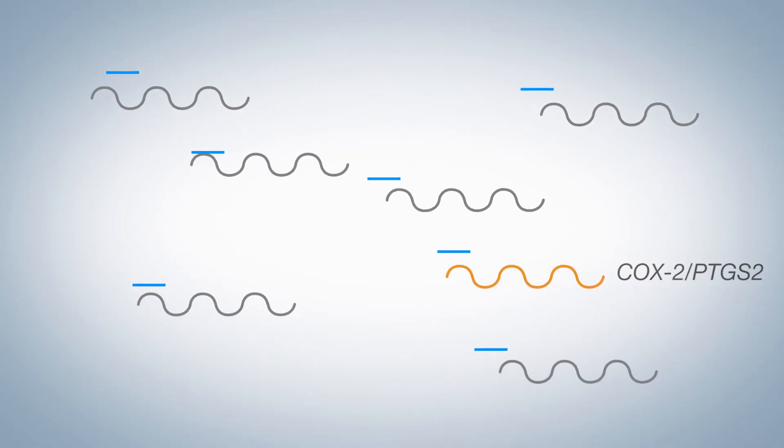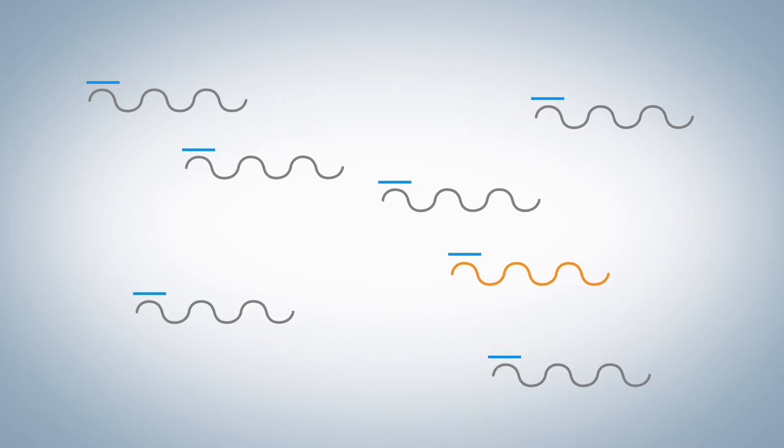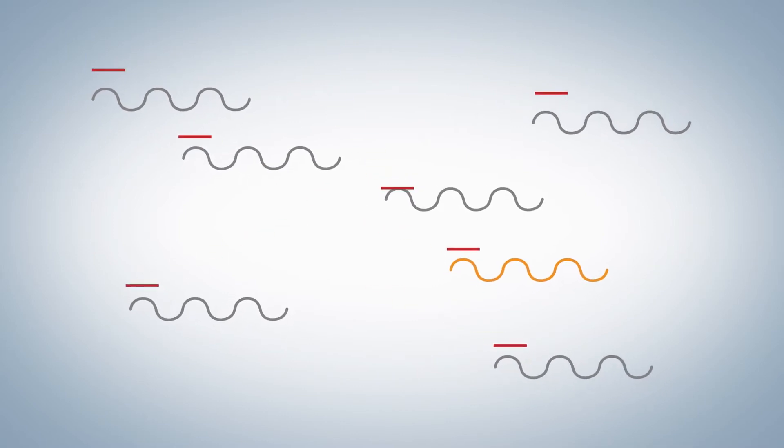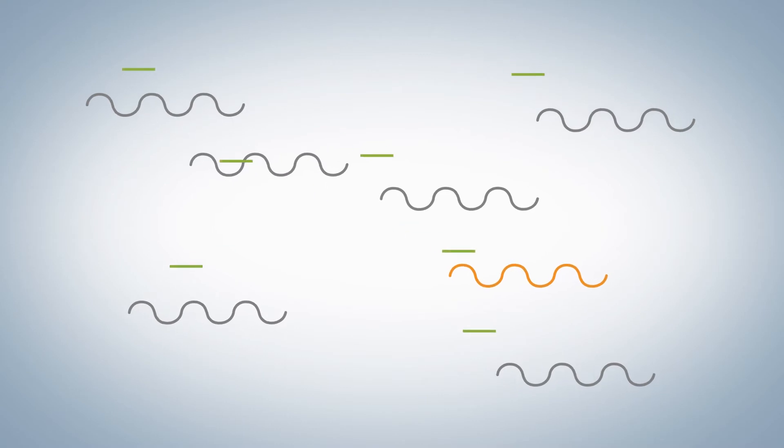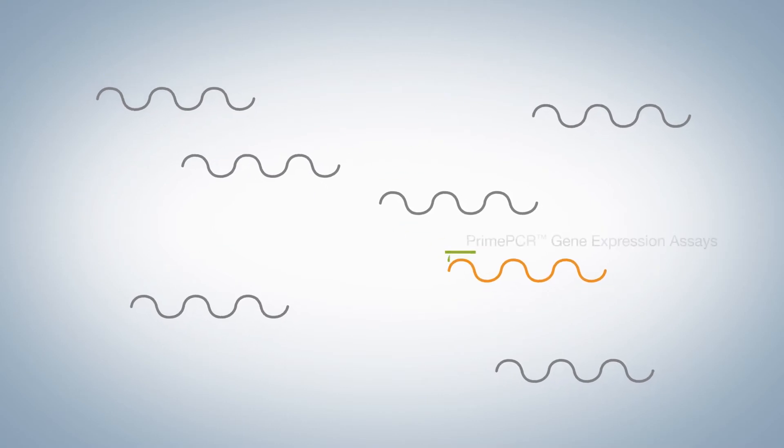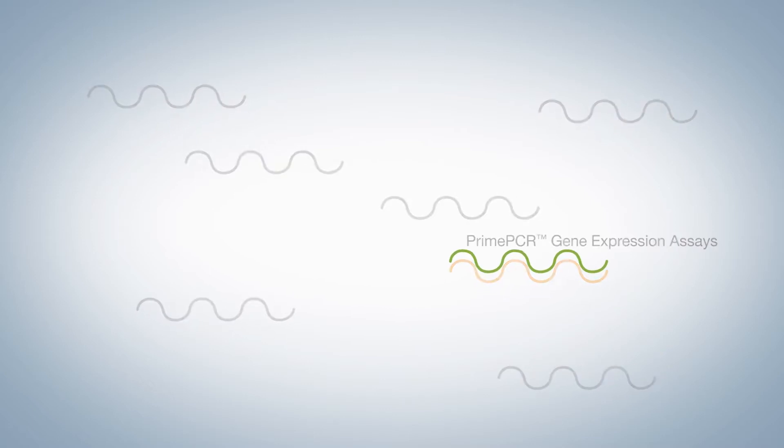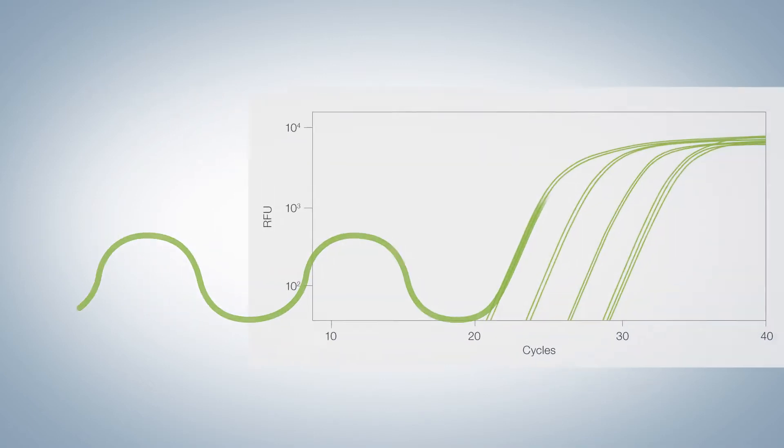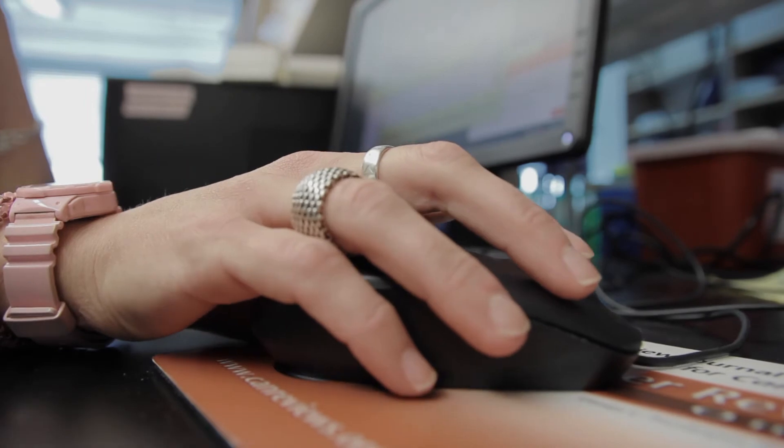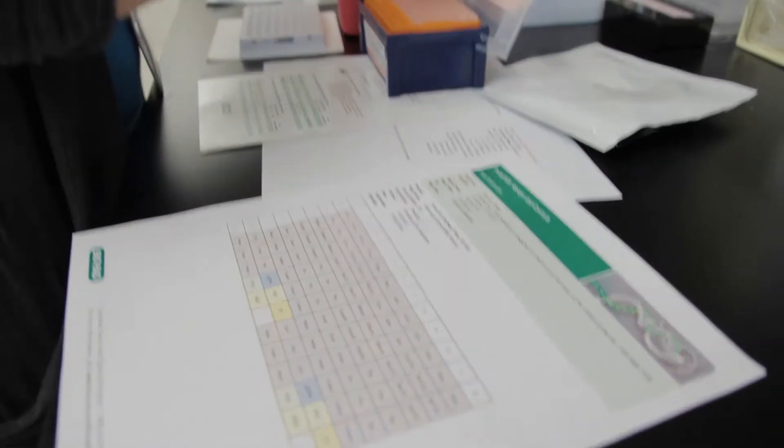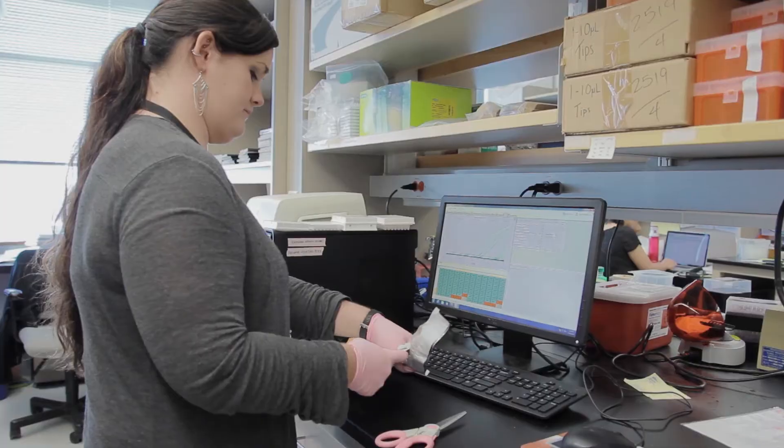We used a lot of different primers that we designed ourselves. We ordered primers from lots of different people, and we really could never get it to work. And so we finally ordered the PrimePCR primers for COX-2, and we were able, for the first time, to observe the knockdown at the gene level in our knockdown cells.